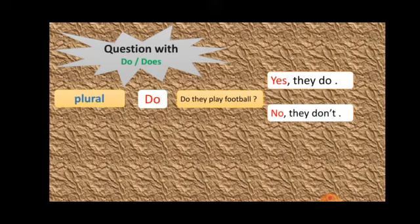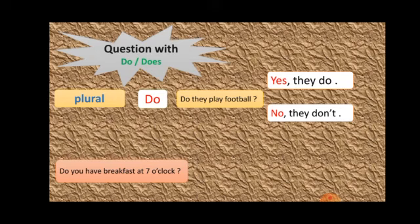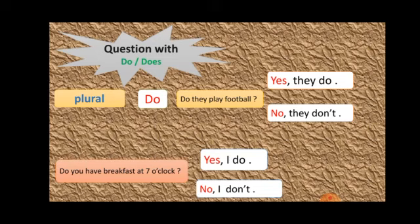Yes, they do. And when no, no, they don't. I add an apostrophe T. It's not. Don't. Do with plural. If plural we say do and we answer by yes or no. Another example: Do you have breakfast at 7 o'clock? Yes I do or no I don't. Pay attention that you in the answer turns into I.